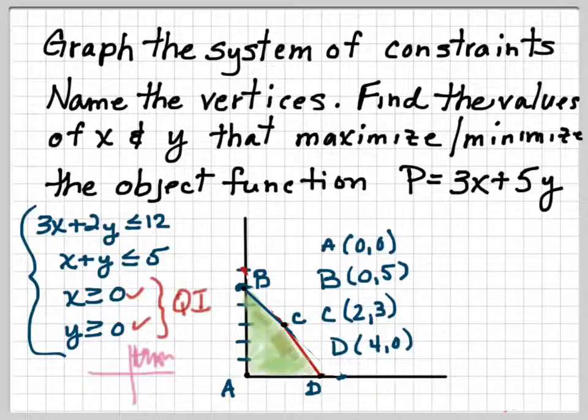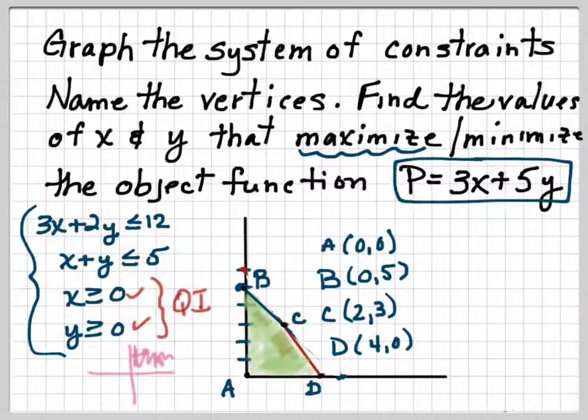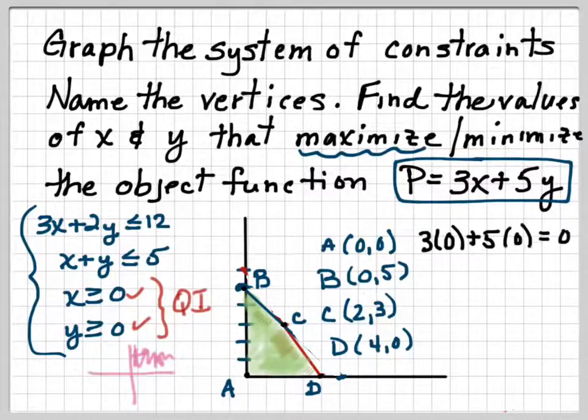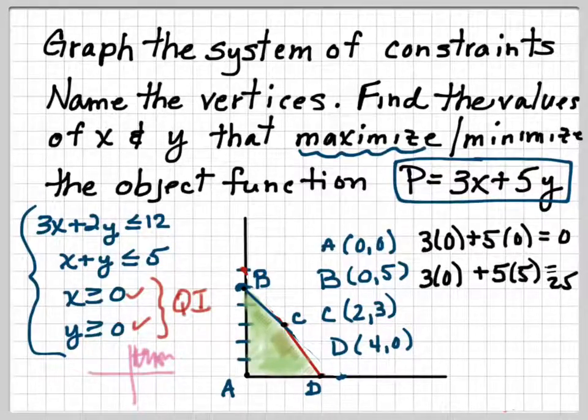But we're doing real simple examples here. So since I want to maximize my objective function, which is my profit here, I am going to plug the values in to the P function. And for the first one I get 0. Plugging in B, plugging in 0 for x and 5 for y, I get 25.